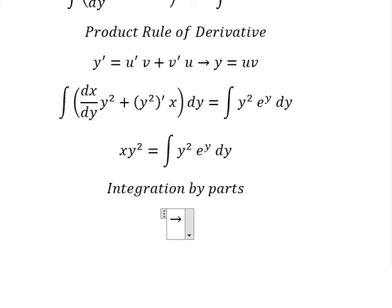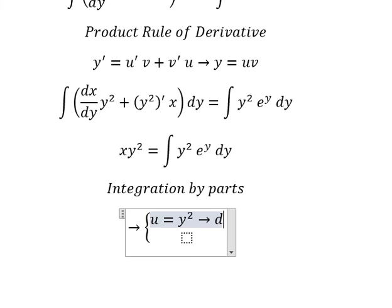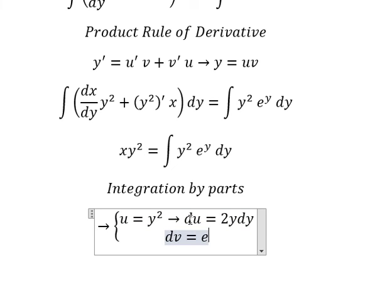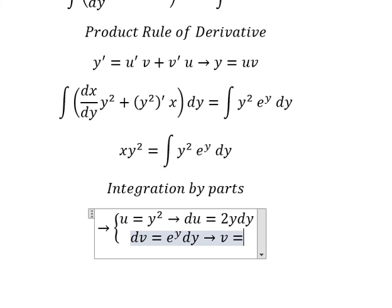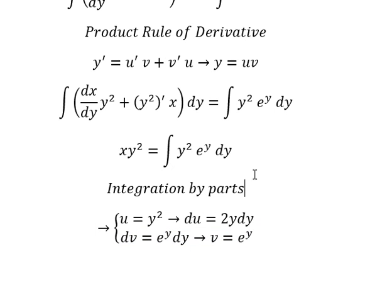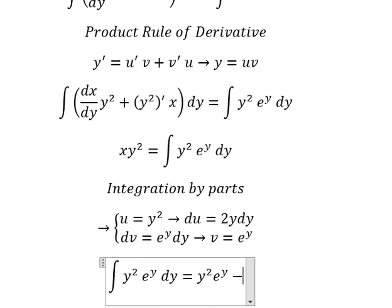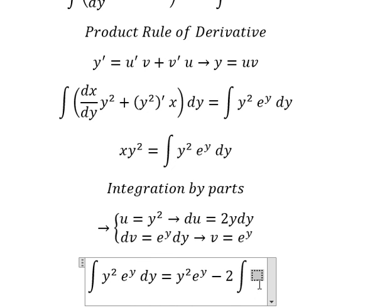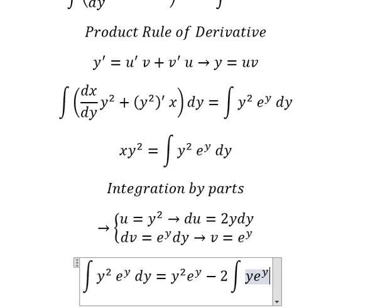So we have u equals y squared. So we do the first derivative for both sides — we have du equals 2y dy. And dv, we have e to the power of y dy. And we have v equals e to the power of y. So we have u multiplied by v, and we have du multiplied by v. So we have 2 and we have the integral of y e to the power of y dy.